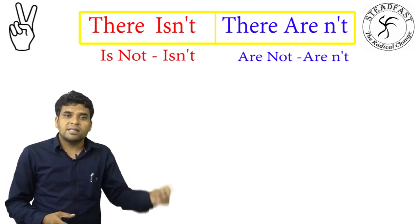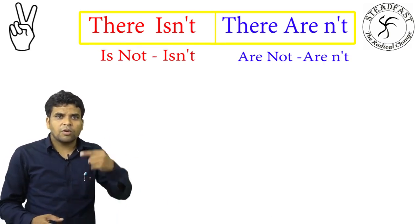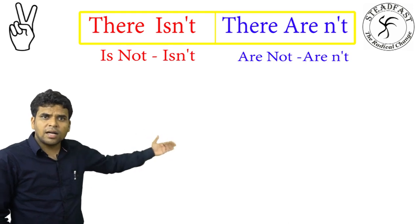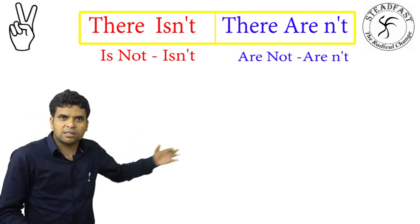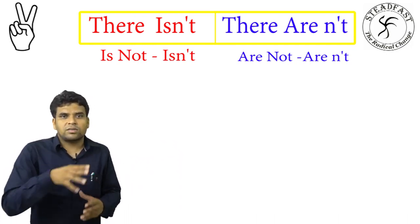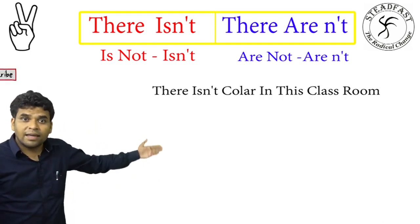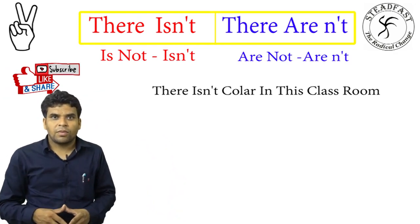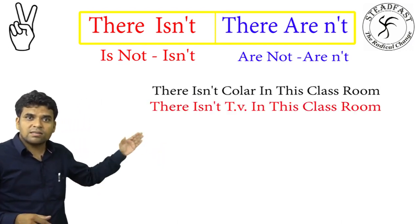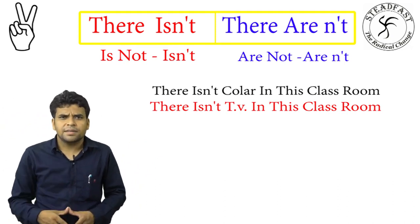Is not — short form is 'isn't'. Are not — short form is 'aren't'. For example: there isn't a cooler in this classroom.